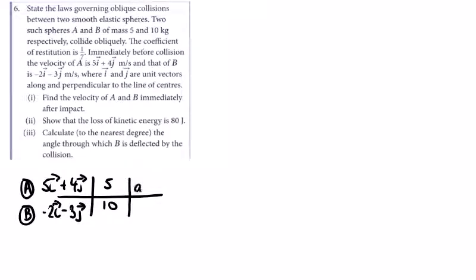After collision, we're going to have A with velocity ai plus 4j, and B with velocity bi minus 3j. So applying Newton's laws, starting with conservation of momentum.